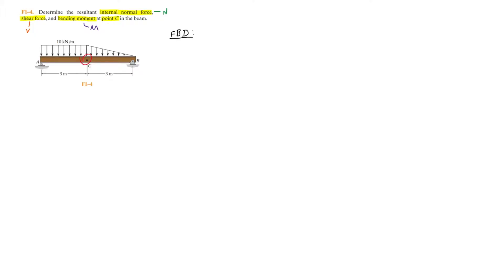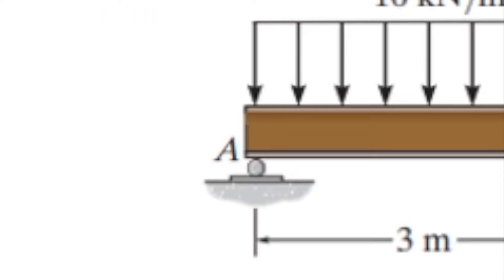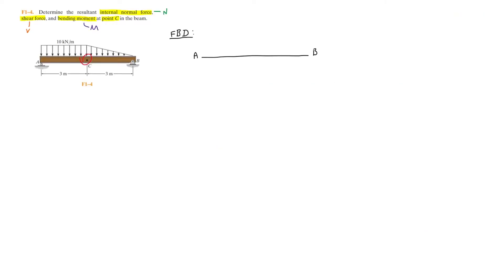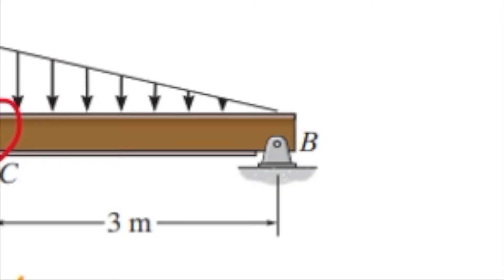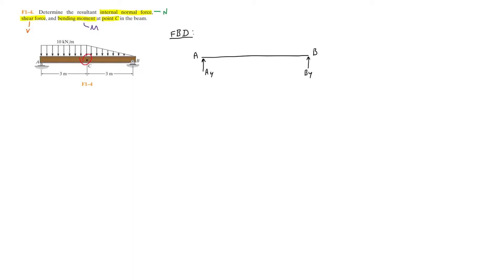The first step is to draw a free body diagram of the system. We have the beam along with points A and B, and we need to add in all the acting forces. At point A on the left we have a roller, which only carries a vertical reaction force Ay. At point B on the right we have a pin support with vertical reaction force By. Since there is no applied force in the x-direction, there is essentially no horizontal reaction force. We then draw in the distributed load along with point C, which is made up of a rectangular section and a triangular section.